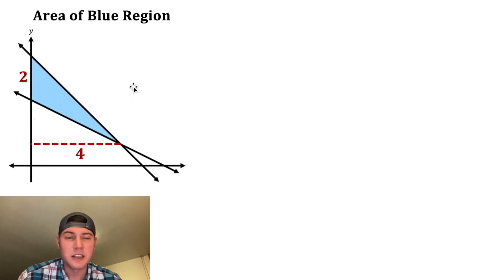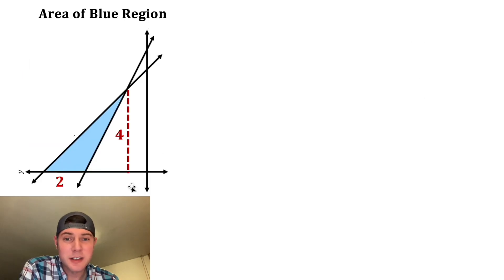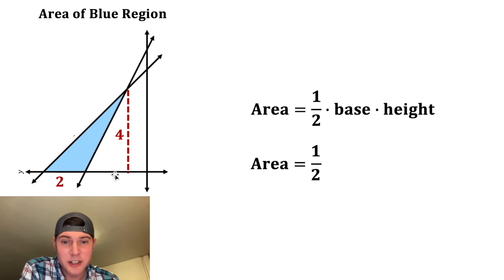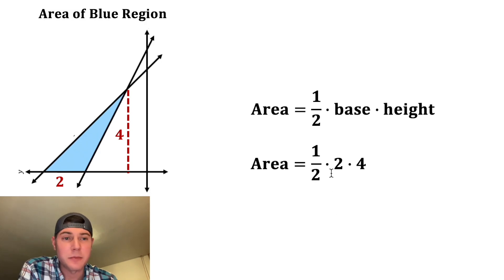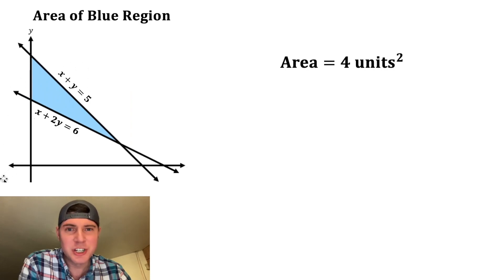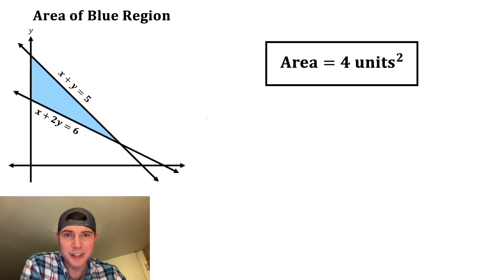Let's rotate this — now we want to find the area of this triangle. The area of a triangle is one-half base times height. The base of this triangle is equal to 2, and the height is equal to 4. The one-half times 2 cancels, so we have an area of 4 units squared. So the area of this blue region is equal to 4 units squared. Now we can put a box around that. How exciting.